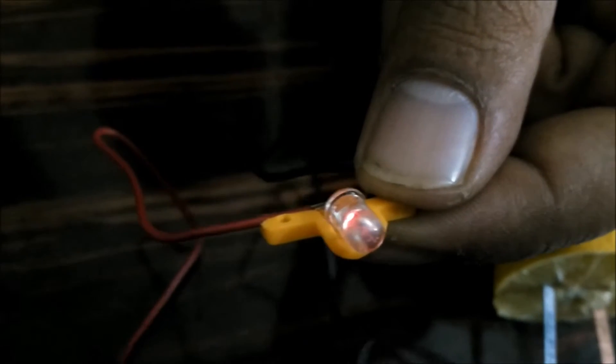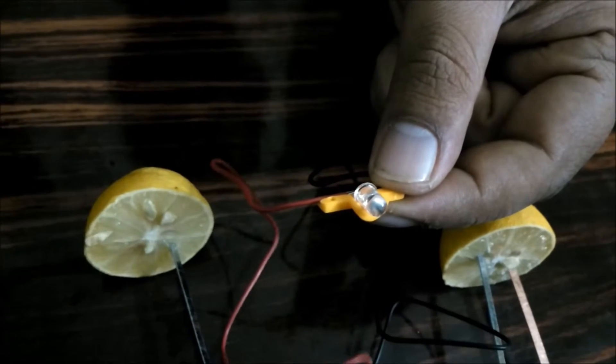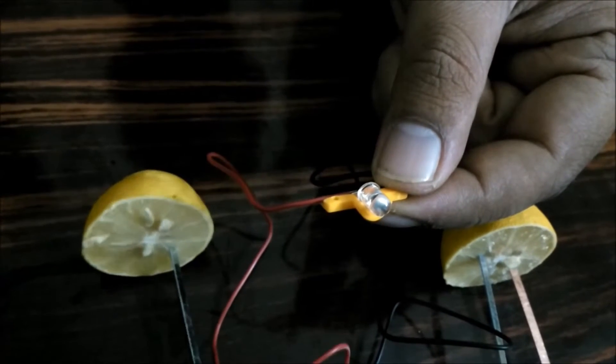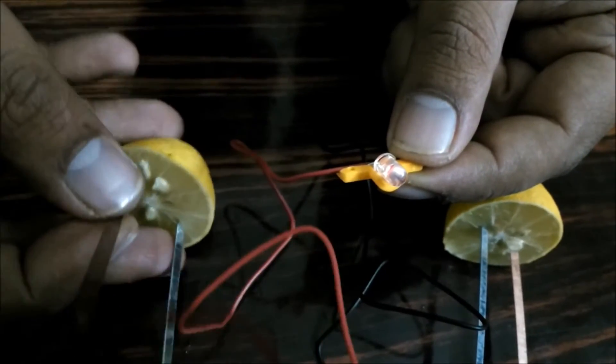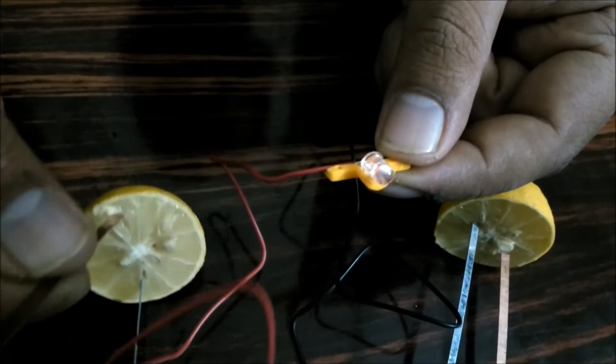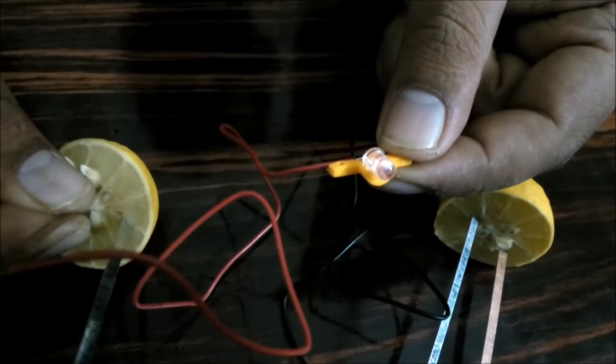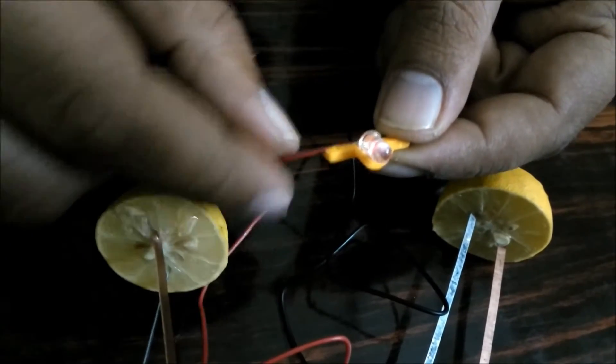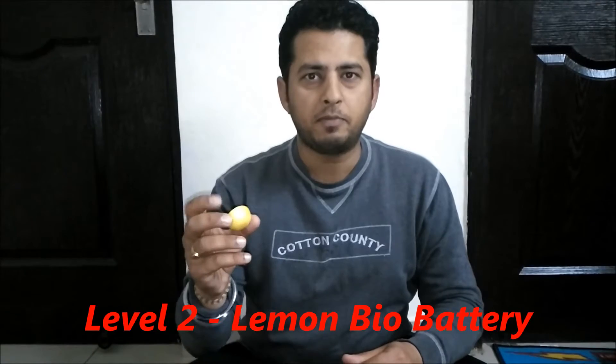Now I am going to remove one copper strip from here and you will see the light will disappear. It is off now. Now I'll insert the copper wire again in the lemon. See, light is coming. So here you can generate electricity from a piece of lemon. This is level two for my lemon bio battery.